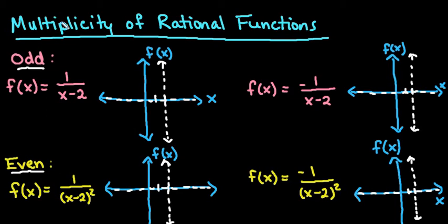Hi, for this video I want to talk to you about the multiplicity of rational functions. The multiplicity is just how many times something repeats. In this case, we're looking at how many times the vertical asymptote repeats.